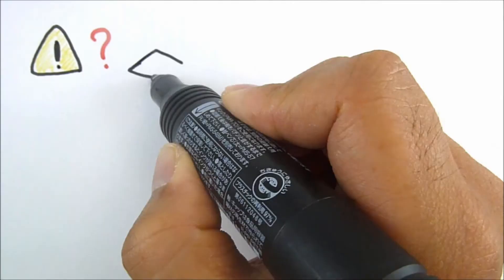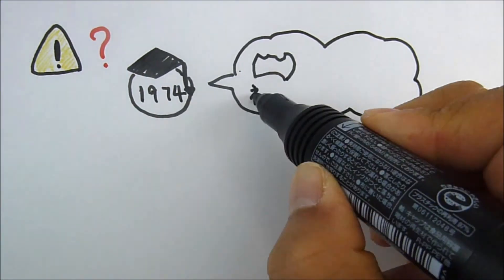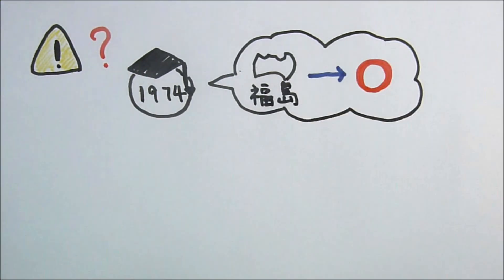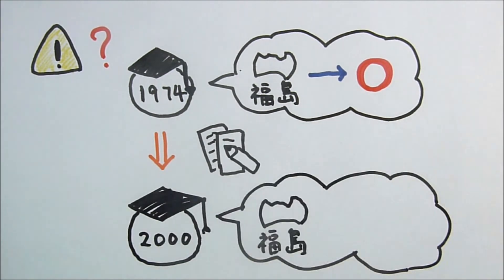Didn't TEPCO know the nuclear plant was at risk? When the first reactor was built in 1974, the risk of a major earthquake or tsunami hitting the region was believed to be low. But later surveys showed that Fukushima was not safe.